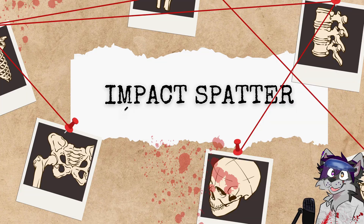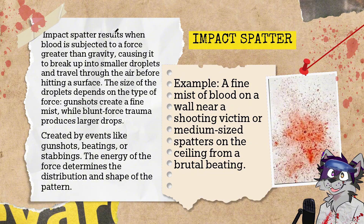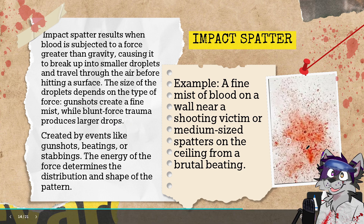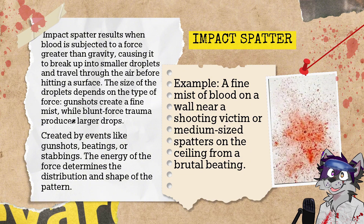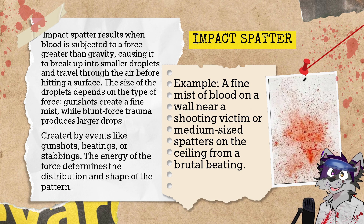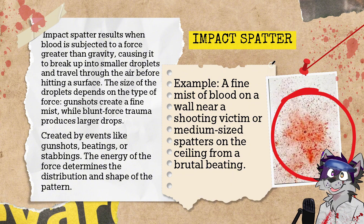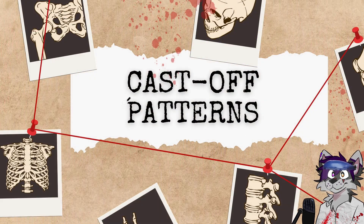The next type is impact spatter. Impact spatter results from blood subjected to force greater than gravity, causing it to break up into smaller droplets that travel through the air before hitting a surface. The size of the droplets depends on the type of force — gunshots tend to create a fine mist while blunt force trauma produces larger drops. These are often created by events like gunshots, beatings, or stabbings. An example would be a fine mist of blood on a wall near a shooting victim, or medium-sized spatters on the ceiling from a brutal beating. Once a bullet exits a wound, the force disperses the blood outward.